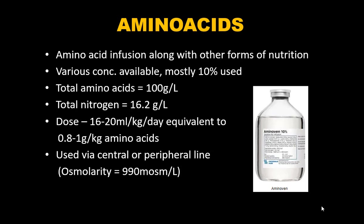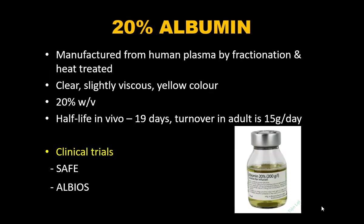Amino acid solutions are seldom given alone — they are given alongside parenteral or enteral nutrition, mainly in malnourished patients. The most commonly used concentration is 10%, containing 100 g/L of total amino acids and 16.2 g/L of total nitrogen. The dose is 16–20 mL/kg/day, equivalent to 0.8–1 g/kg/day of amino acids — the daily requirement. Preferably given via central line but peripheral use is possible.